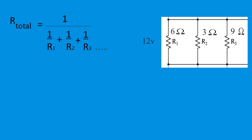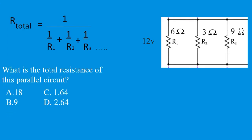Let's do another. We have 6, 3, and 9 ohms as our resistors. What is the total resistance of this parallel circuit? Note right away that the answer is always gonna be smaller than the smallest resistor in the circuit. So if you're in the testing center, you can immediately tell that answers A and B are not gonna be correct — the total resistance of a parallel circuit will be smaller than the smallest resistor, which is 3. So you'd have a 50-50 shot between C and D.